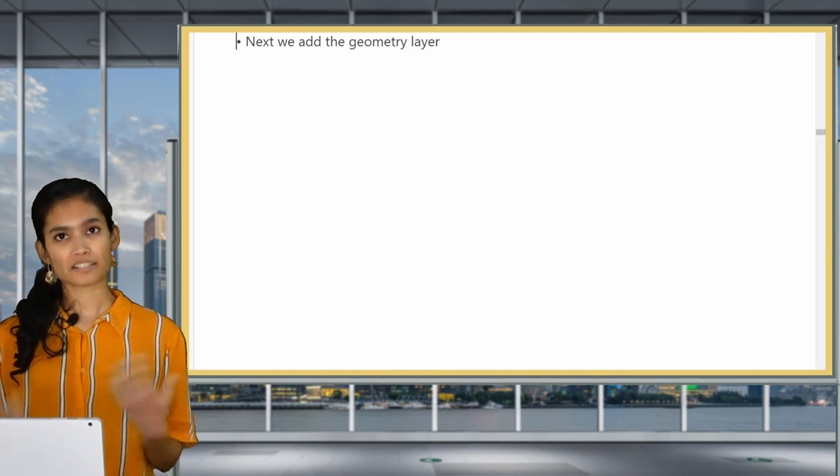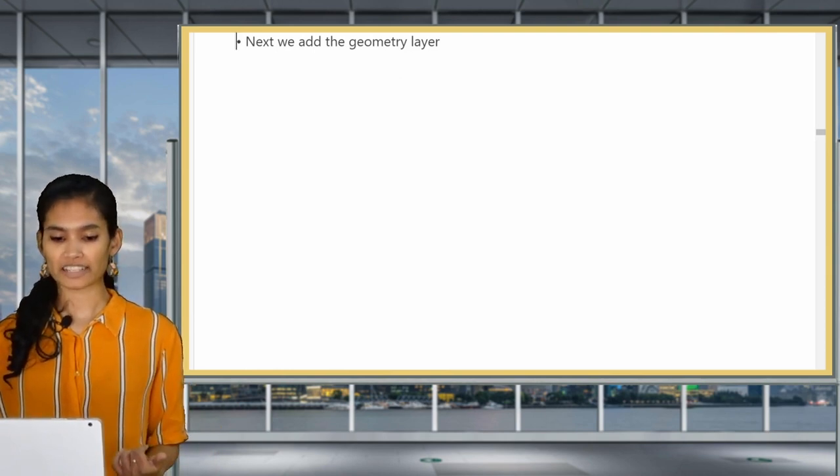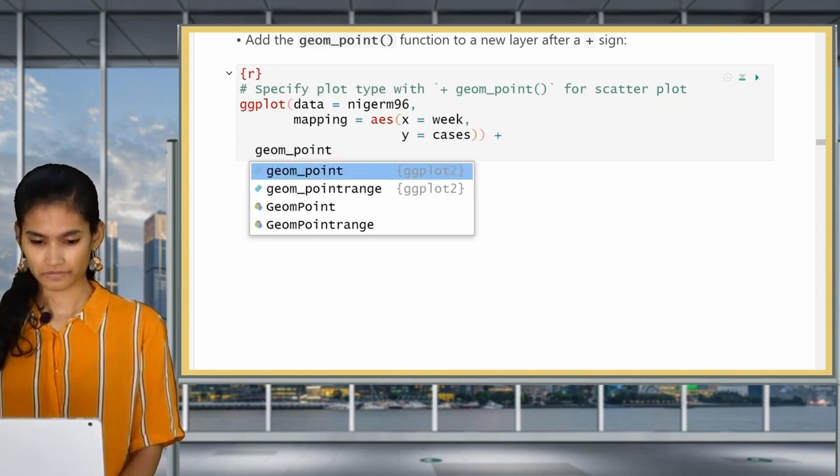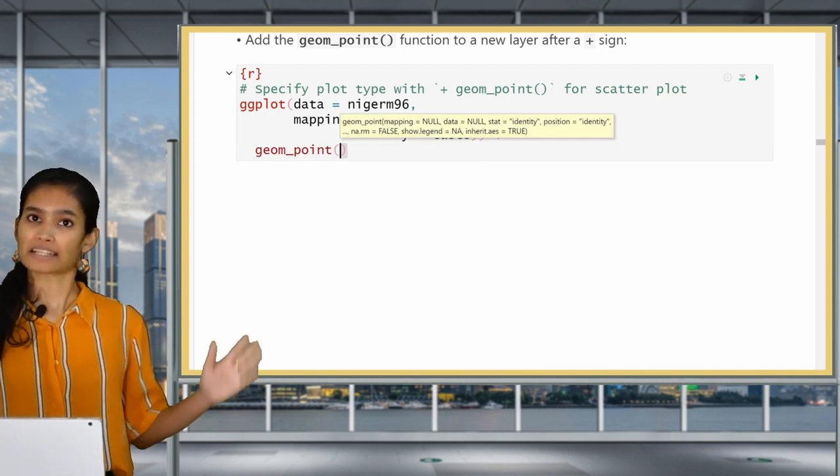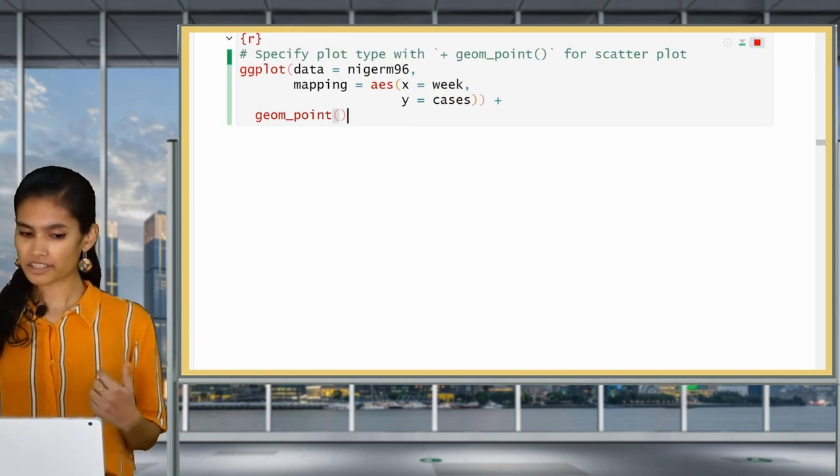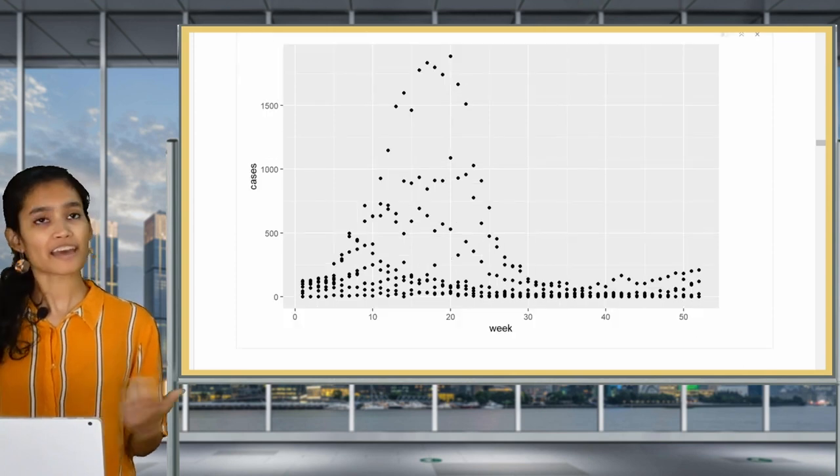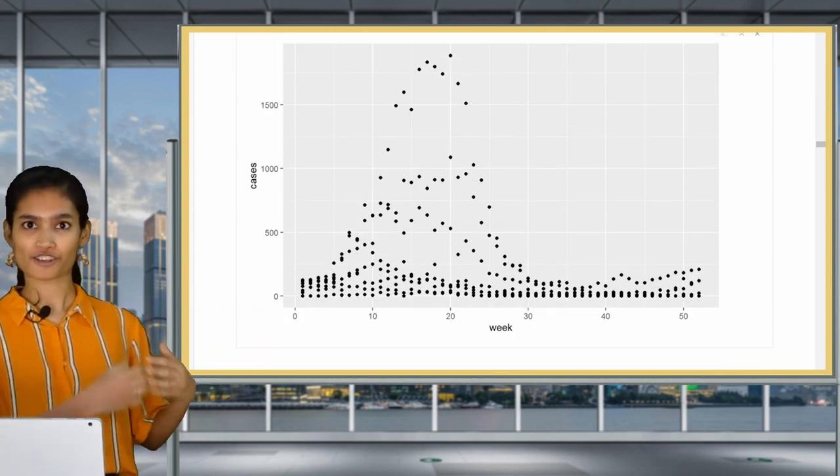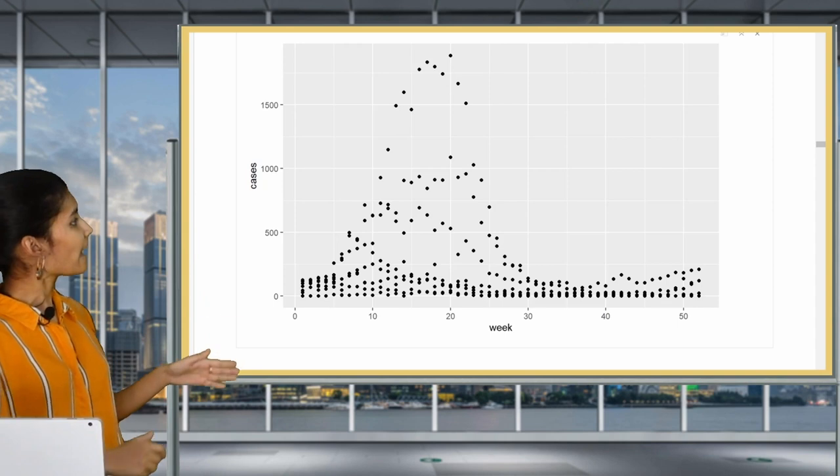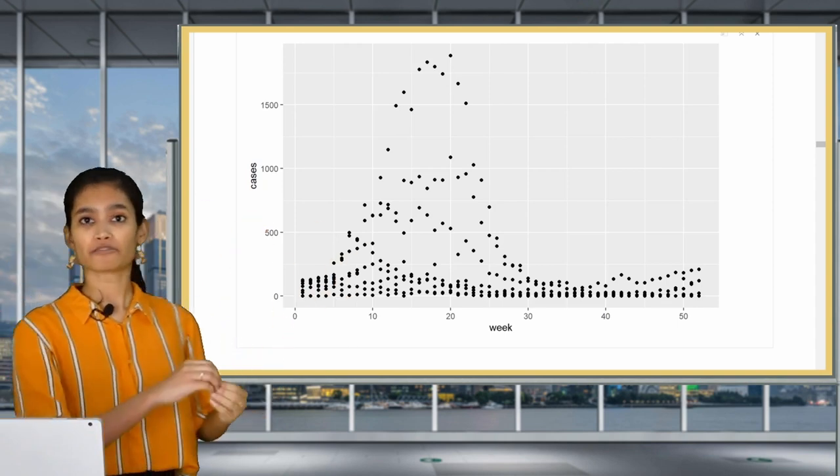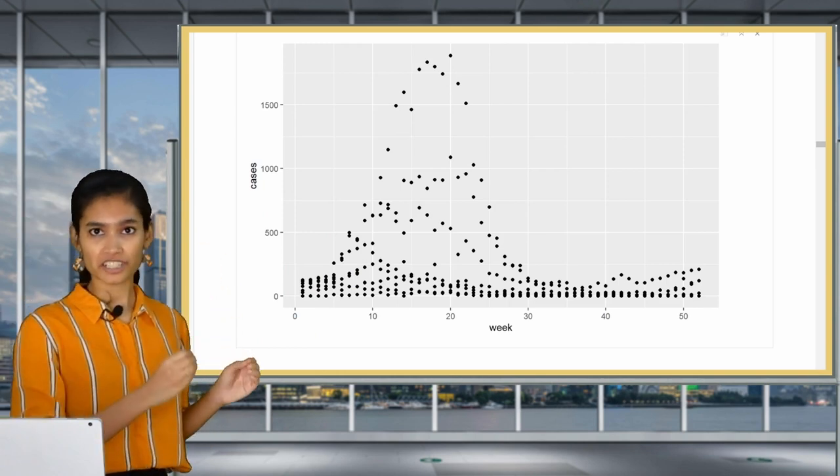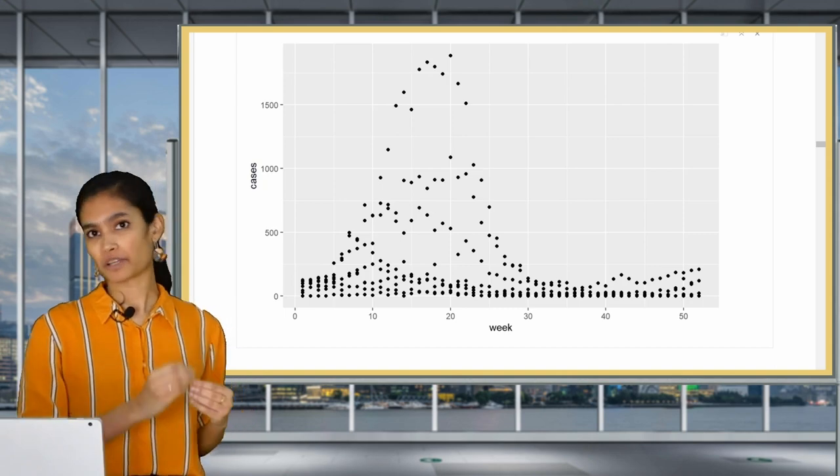Now we add the geometry layer to specify what kind of plot we want to create. Enter a new line and type in geom point. You don't need to add any arguments inside geom point right now. And now we have all the three essential layers. So if we run this code, we should get a plot. And we do! Points have been added with the geom layer and now we have a complete scatter plot. So you'll see that there are eight points for each of the 52 weeks, representing eight different regions. Right now we can't tell which point is from which region, but we will add colors later on so that we can distinguish between them.